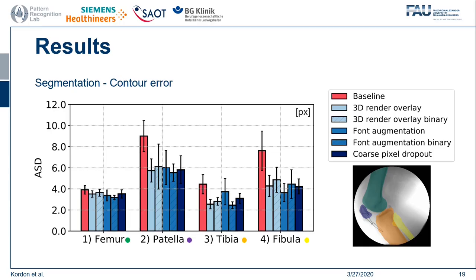When we look at the contour error reported as average surface distance, the results show similar trends and confirm our interpretation of the IOU overlap metrics. Especially for smaller bones, the proposed augmentation techniques can significantly reduce spikes of the bone contour in ambiguous regions.